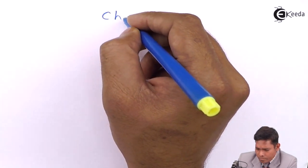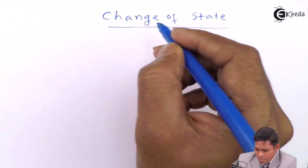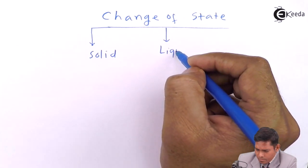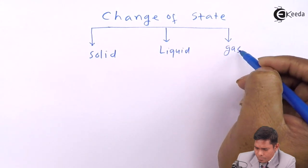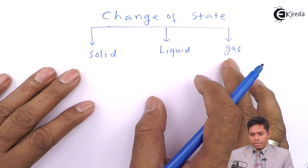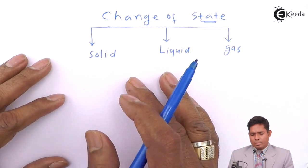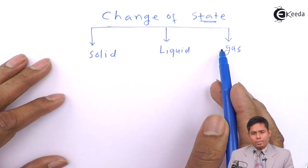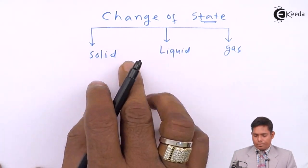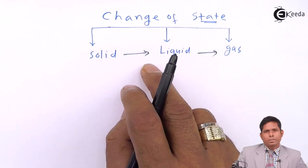Change of state basically means we have three states of matter: solid, liquid, and gas. You can convert solid to liquid and liquid to gas — that is the change of state.